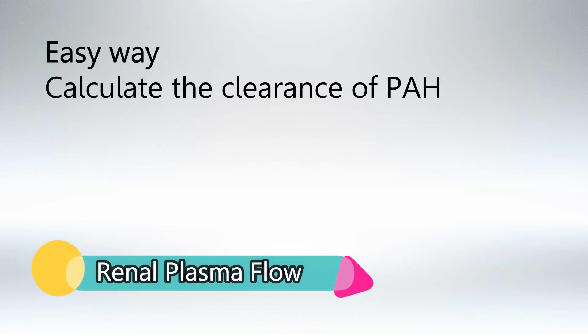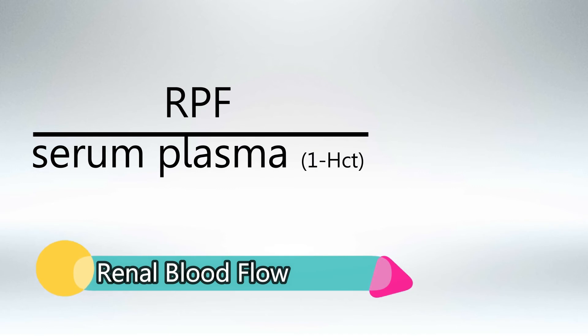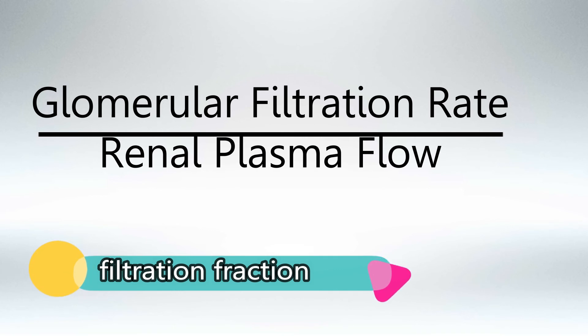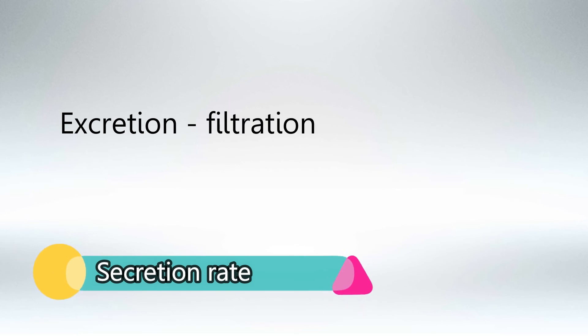To calculate renal plasma flow, simply calculate the clearance of PAH. To calculate renal blood flow, it's renal plasma flow over serum plasma, which is 1 minus hematocrit. Filtration fraction is GFR over renal plasma flow. And finally, secretion rate is excretion minus filtration.